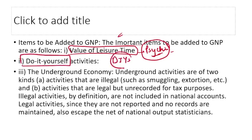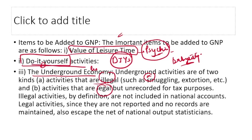DIY activities are things people do creatively at home — like making a flower vase, crafting a keychain from waste products. Underground economy is also included — this covers activities not reported for tax purposes. These can be legal or illegal; for example, babysitting someone's child for payment with no formal registration is a legal underground economy activity. So leisure time value, DIY activities, and the legal part of the underground economy are all included in Net Economic Welfare.